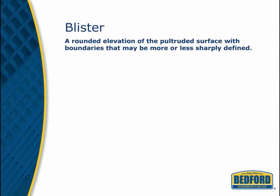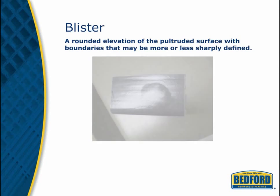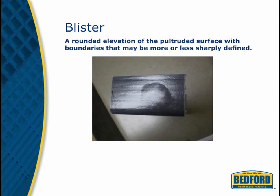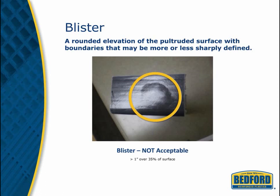A blister is a rounded elevation on the surface of the part. It typically happens as a result of variations in temperatures during the pultrusion process. Blisters are permitted if they form between the surfacing veil layer and the balance of the laminate, but only if the width is no greater than 80% of surface width.